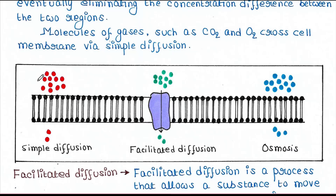Here is an example of simple diffusion with the plasma membrane. Molecules move from high to low concentration until the concentration on both sides becomes similar, and they don't require any energy for that. Molecules of gases such as carbon dioxide and oxygen cross the cell membrane via simple diffusion.